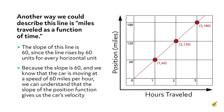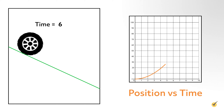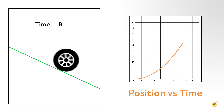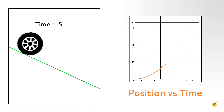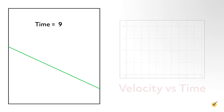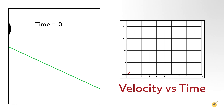The slope of this line is unsurprisingly 60, since the line rises by 60 units for every horizontal unit. Because the slope is 60 and we know that the car is moving at a speed of 60 miles per hour, we can understand that the slope of the position function gives us the car's velocity.